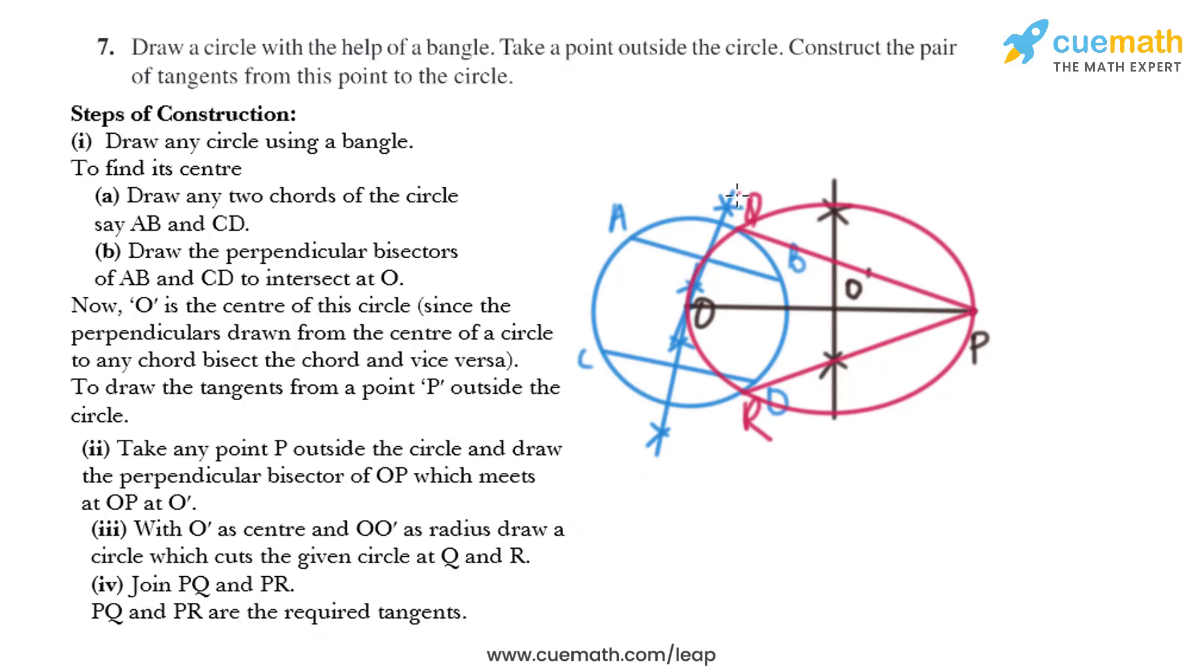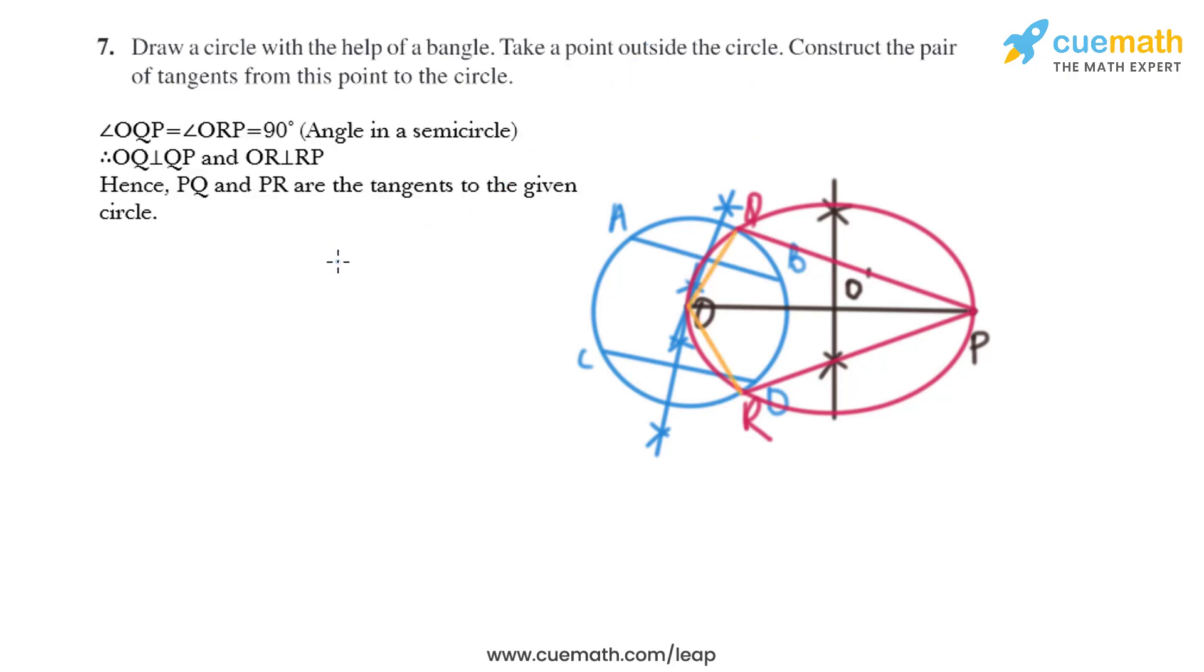Now let's do the justification of the construction. Angle OQP equals angle ORP equals 90 degrees. So OQ is perpendicular to QP and OR is perpendicular to RP. Hence, PQ and PR are the tangents to the given circle.